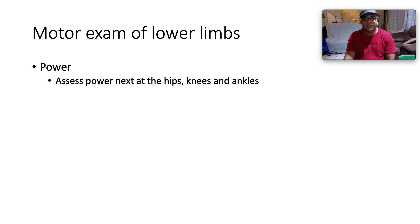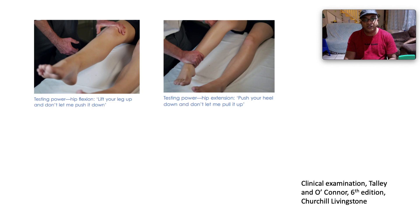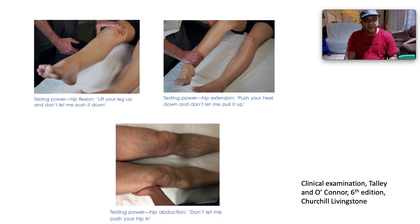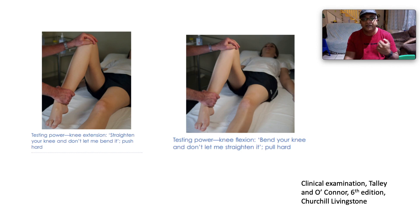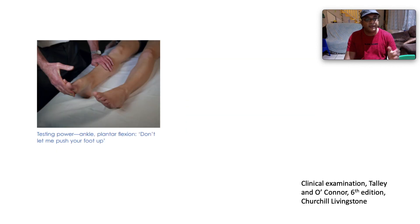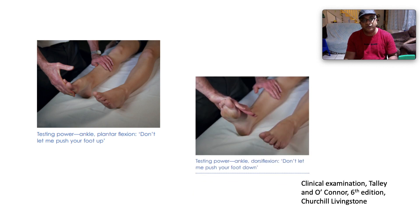Assess power using the MRC scale at hips, knees, and ankles. For hip flexion: lift your leg up, don't let me push it down. For hip extension: push your heel down, don't let me pull it up. For hip abduction: separate your legs, don't let me push them in. For hip adduction: bring your legs together, don't let me push them apart. For knee extension: straighten your knee, don't let me bend it. For knee flexion: bend your knee, don't let me straighten it. For plantar flexion: don't let me push your foot up.